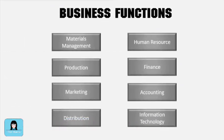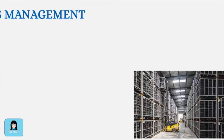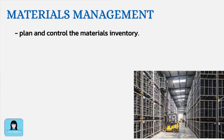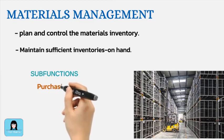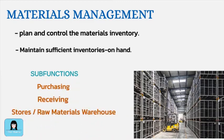Now, let us explore the responsibilities of the functional areas in a business organization engaged in the manufacturing of finished goods. We'll start with materials management. Materials management involves planning and controlling the materials inventory of the company. The firm must have adequate inventories on hand to meet its production needs and yet avoid excessive inventory levels. In order to achieve this objective, materials management has three sub-functions: purchasing, receiving, and stores.